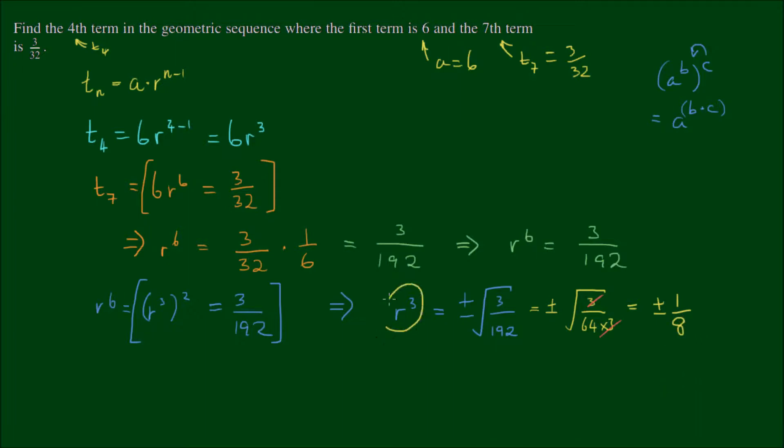What I could do now is to take the cubed root of positive or negative 1 on 8. But I'm not going to do that, because what we have here in the term that we're looking for is the expression r cubed. So all I need to do is to substitute this value of r cubed into here. And that means t4 is equal to 6 by positive or negative 1 on 8.